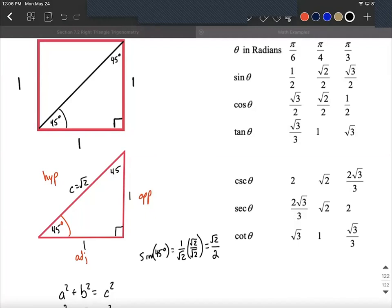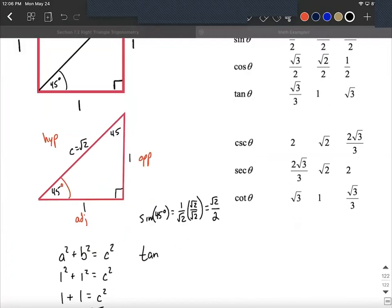And then if we want to get tangent, tangent is going to be opposite over adjacent. So tangent of 45 is going to be opposite over adjacent, so one over one is where we get one from. So tangent of 45 is going to be one.